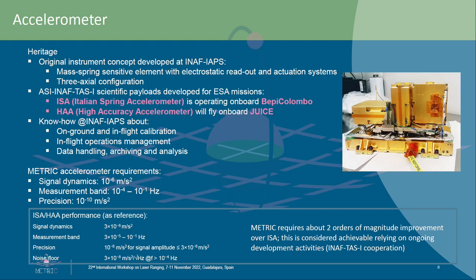For the accelerometer, our initial analysis is based on ISA, the Italian spring accelerometer developed in our research group. This is a three-axis accelerometer — you can see the flight version in the photo, currently flying on the BepiColombo mission to Mercury. An identical version called HAA will fly onboard the JUICE mission to Jupiter. For MEDRIC we would like an accelerometer a couple of orders of magnitude more sensitive than the ISA as currently implemented in BepiColombo, which we consider achievable based on ongoing development activities in our group.